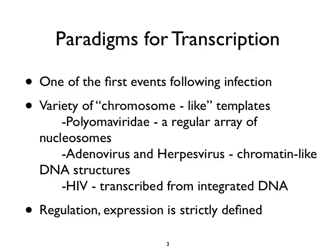Why is transcription important? For the most part, when a virus enters a cell, the first thing it does is get transcribed—especially if you're a DNA virus. There are a variety of chromosome-like templates, and that's an important consideration: they don't have all the features of chromatin present in the eukaryotic nucleus, but they have many of them. The polyomaviridae have a regular array of nucleosomes on them, except for one area surrounding the origin of DNA replication—which also encompasses the promoter for early and late virus transcription. That region is bare, conveniently, so it's accessible to the transcriptional apparatus.